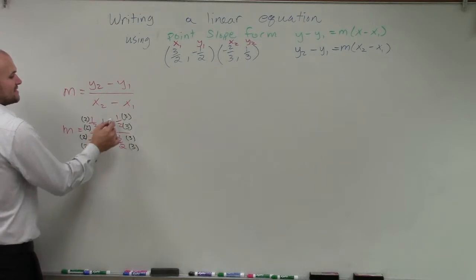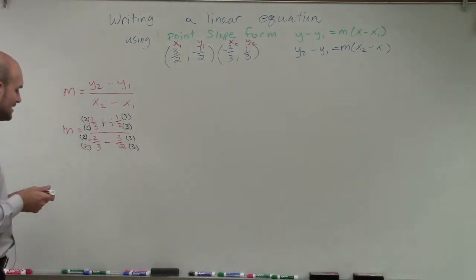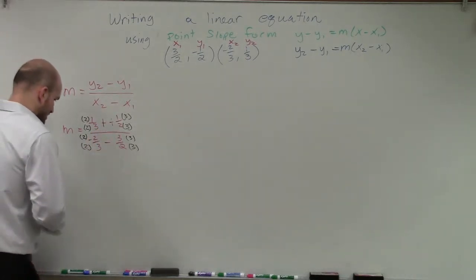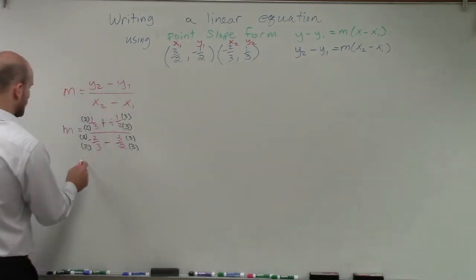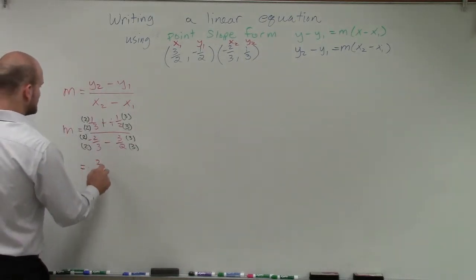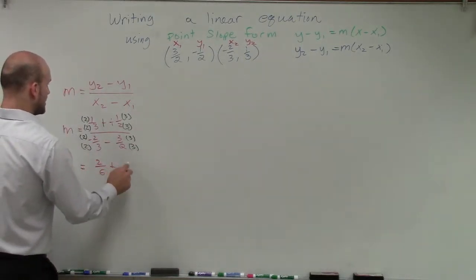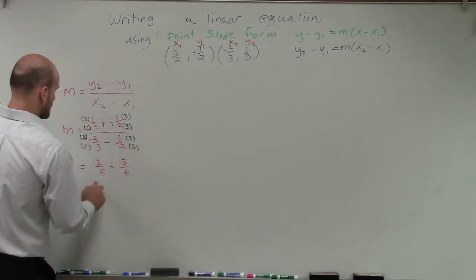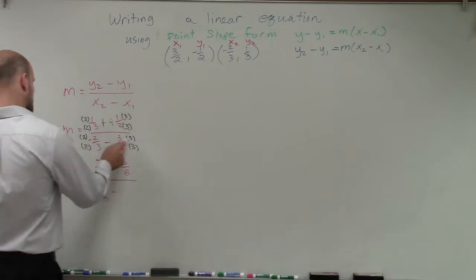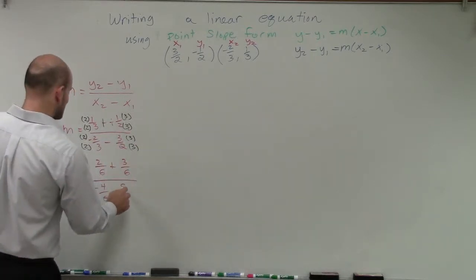We also know minus a negative, that's going to turn to a positive. So now let's just go ahead and rewrite our equation, our formula. So therefore now we have 2/6 plus 3/6 all over negative 4/6 minus 9/6.